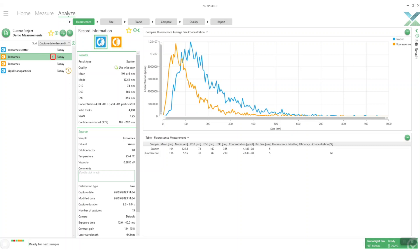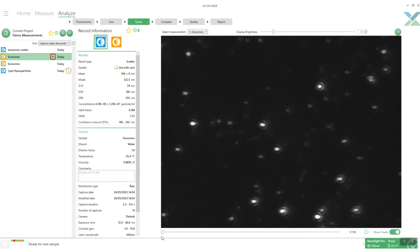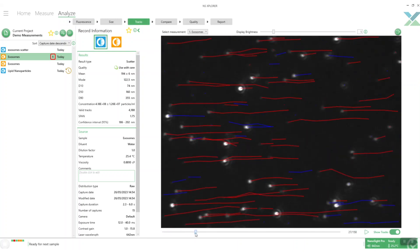We can then also look at the tracks for these videos so for example here we've got the scatter tracks for the exosomes and we can play through them and have a look at what they look like.